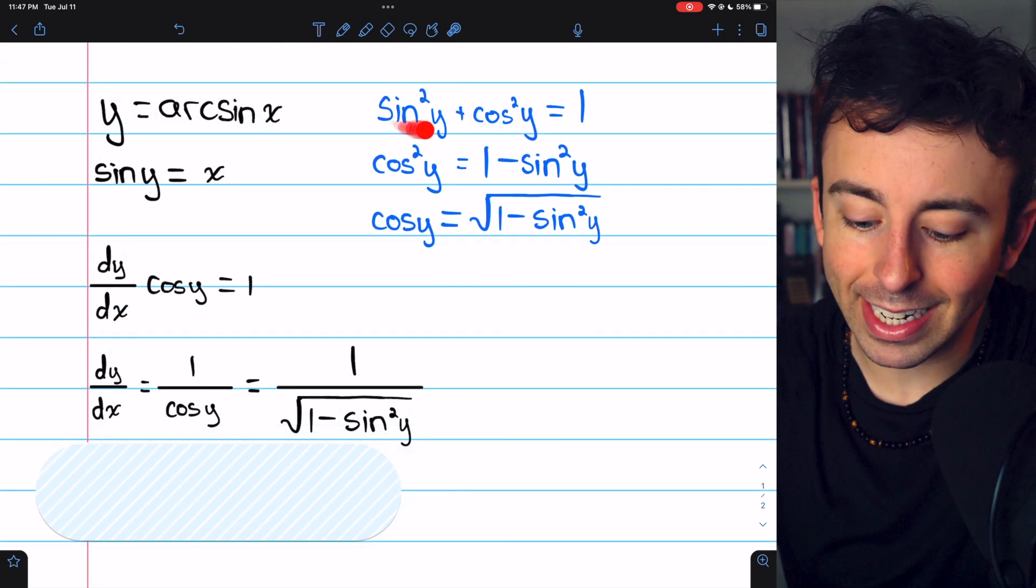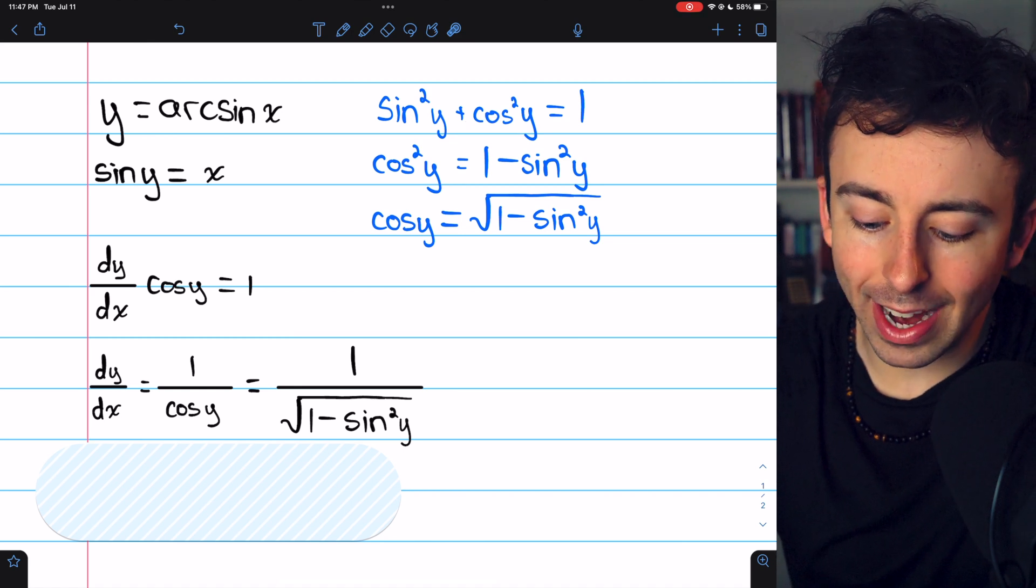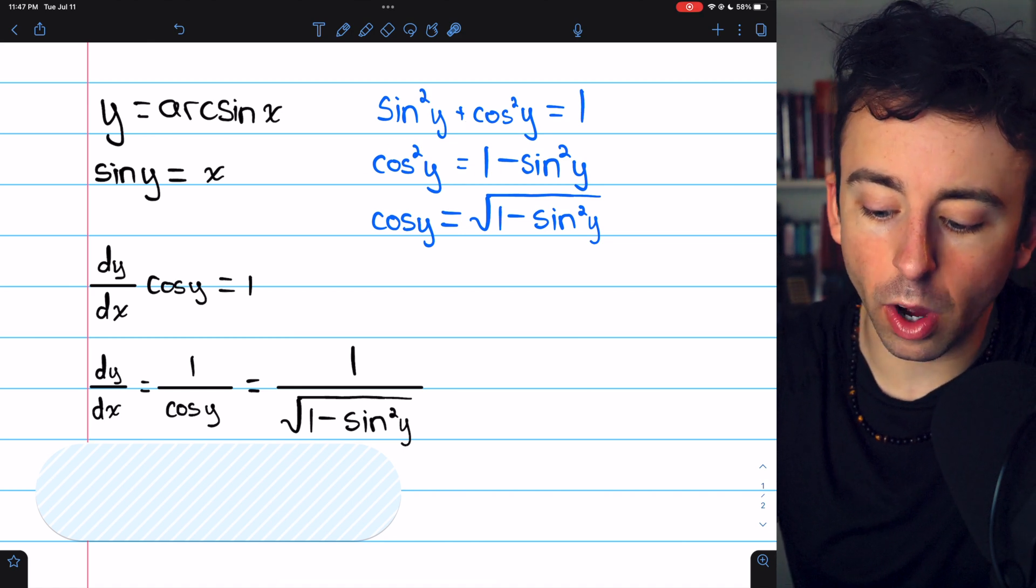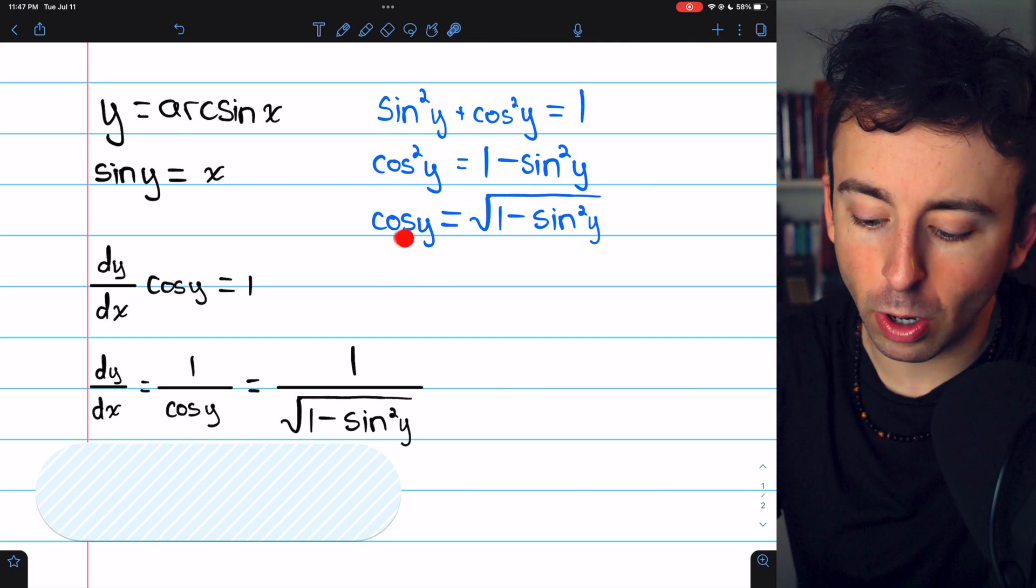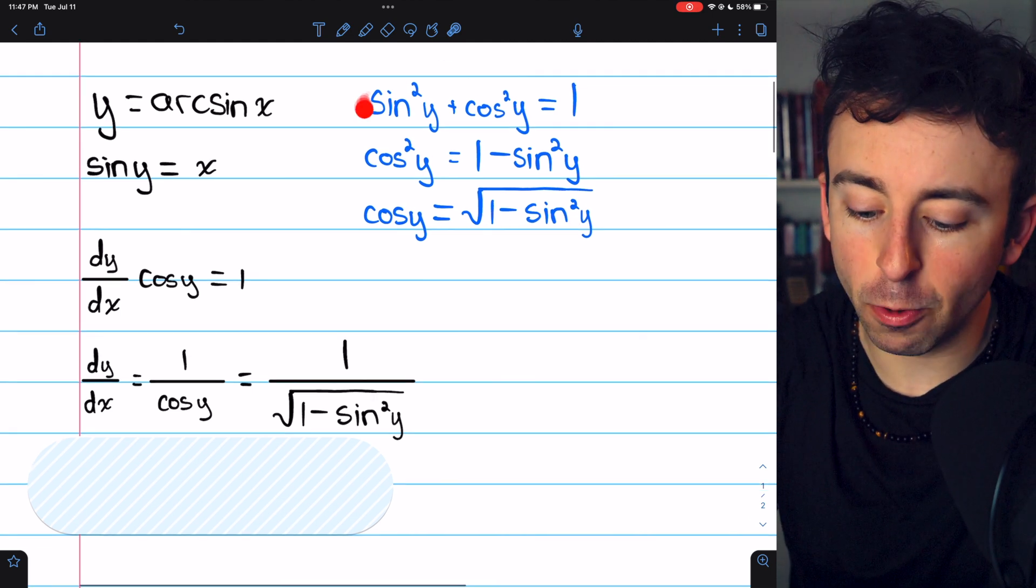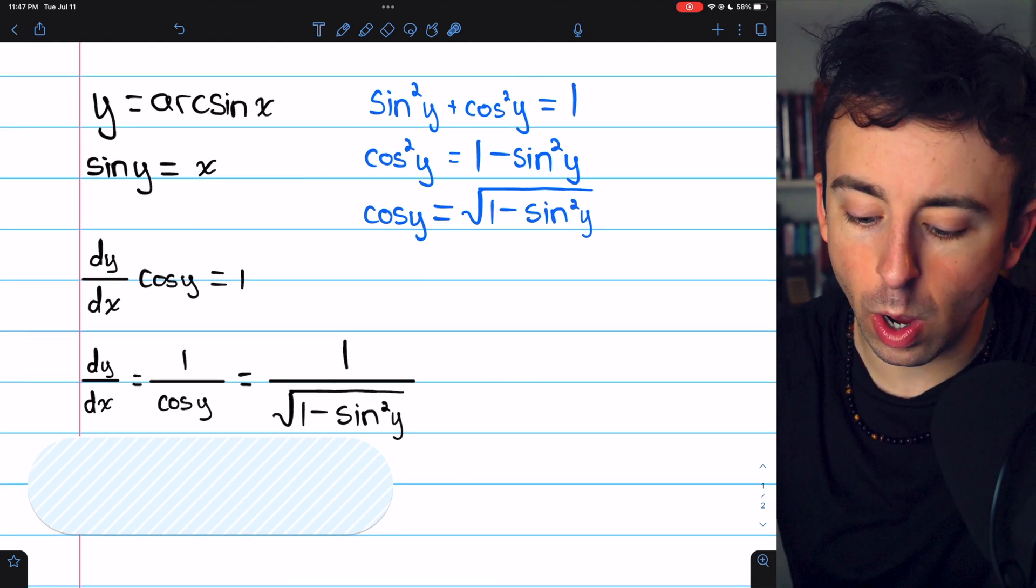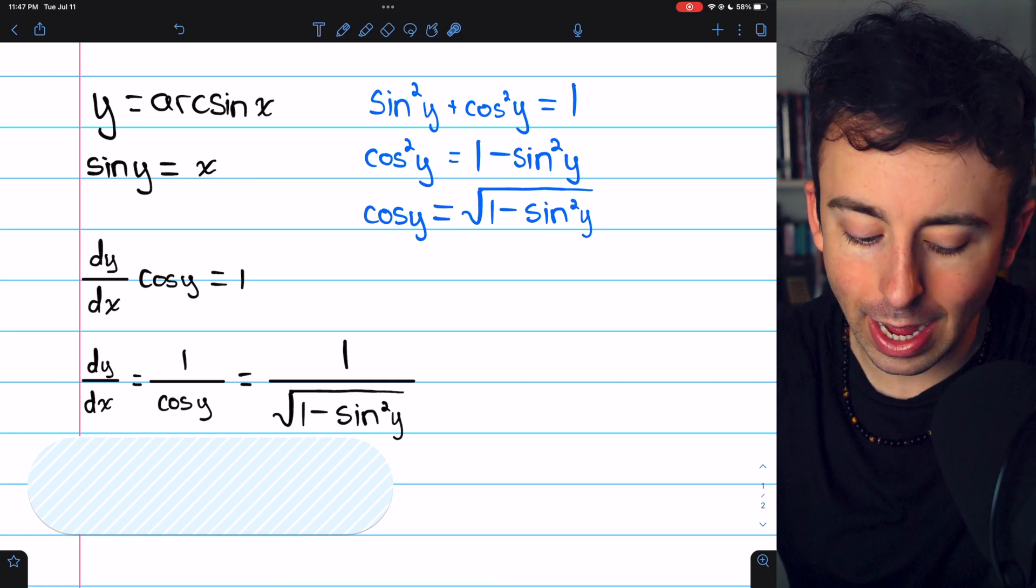Recall the Pythagorean identity: sin²(y) + cos²(y) = 1, but then cos²(y) would equal 1 - sin²(y), and taking the square root of both sides allows us to express cosine in terms of sine. Using the Pythagorean identity, we find cos(y) equals the square root of 1 - sin²(y).